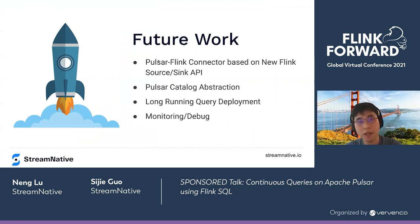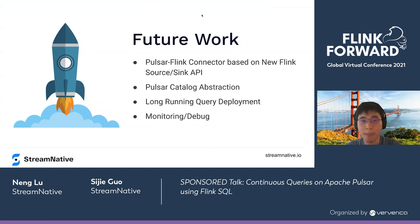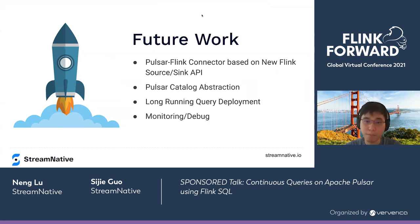As for future work, we are actively working on a new Pulsar Flink connector based on the new Pulsar source and sink API. The source part has already been merged into upstream Flink and is available in the Flink 1.14 release, and we're currently working on the sink part. The second piece of work is the Pulsar catalog abstraction — mapping Pulsar topics and namespaces to Flink-understandable structures like tables and databases — and we hope to enhance flexibility for querying across multiple topics and customizing Pulsar client settings.